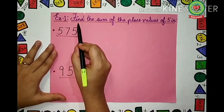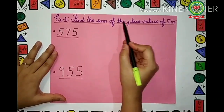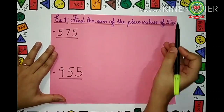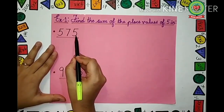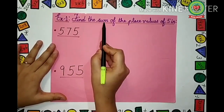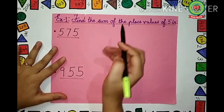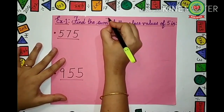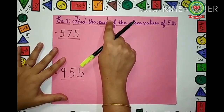Read the question with me: Find the sum of the place values of 5 in 575. Read the question again: Find the sum. What is the meaning of sum? Sum means plus.